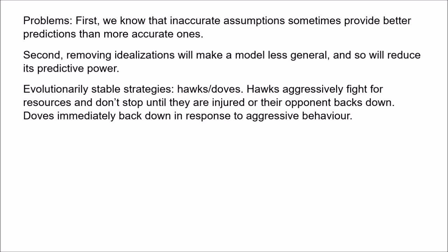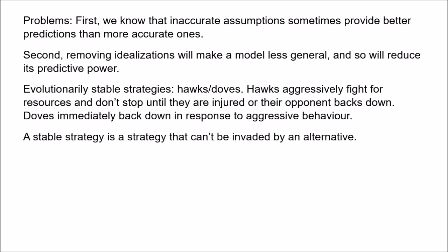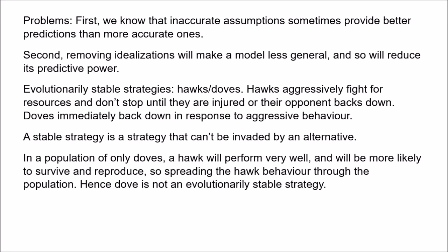The hawks will fight aggressively for resources — they won't stop until either they're injured or their opponents back down — while the doves immediately back down in response to aggressive behaviour. These behaviours have different benefits: doves are much more likely to avoid injury in the event of any conflicts, but they'll be less likely to retain their resources than the hawks. An evolutionary stable strategy is a strategy adopted by a population that can't be invaded by another strategy. Suppose all the animals in the population were to adopt the dove strategy — they never fight to acquire or maintain resources. Now suppose a mutation occurs and a hawk is born. The hawk will fight to steal resources and to keep them. In a population of only doves, this hawk is never going to be harmed because the doves will all immediately back down. So this hawk is going to do very well, it will be more likely to survive and reproduce, and so the hawk behaviour will spread through the population — showing that dove is not an evolutionary stable strategy.